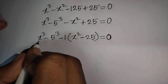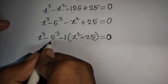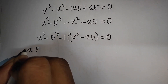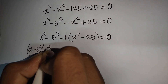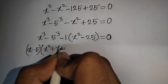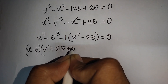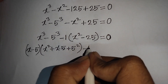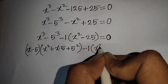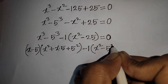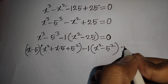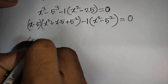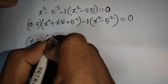Now we can apply the formula for a³ - b³, where a is x and b is 5. According to the formula: (x - 5)(x² + 5x + 25), then minus 1 times (x² - 25), which can be written as minus 1 times (x² - 5²), equal to 0.